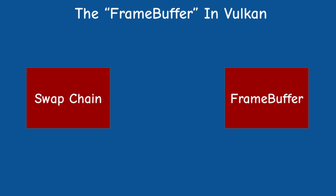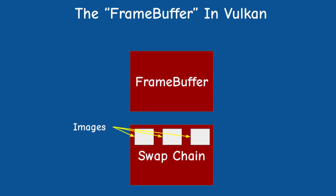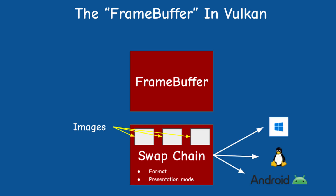The swapchain can be considered the lower level object of the two. It contains one or more images which allows a double buffer setup or even more. It is responsible for defining the format of the images and the method by which an image moves from the application to the actual display, aka the presentation mode. Since the swapchain handles presentation on a window it has to be tightly coupled with the underlying windowing system. Therefore, management of the swapchain is part of a Vulkan extension and each operating system has its own extension.